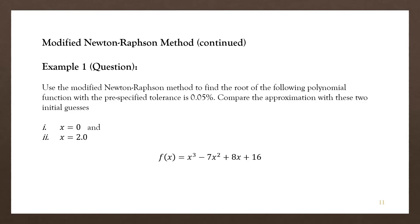Let's take a look at the modified Newton-Raphson method example. Use the modified Newton-Raphson method to find the root of the following polynomial function with the pre-specified tolerance of 0.05 percent. Compare the approximation with two initial guesses: first using x equal to 0, and then x equal to 2.